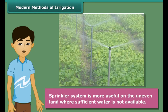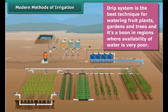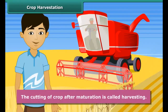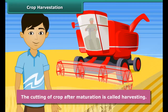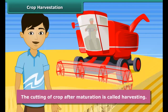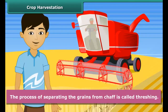Let us now know modern methods of irrigation. A sprinkler system is most useful on uneven land where sufficient water is not available. Perpendicular pipes with rotating nozzles on top are joined to the main pipeline at regular intervals. When water flows through the main pipe under pressure, it escapes from the rotating nozzles and gets sprinkled on the crop as if it is raining. In a drip system, water falls drop by drop just at the position of the root — it is the best technique for fruit plants, gardens, and trees, and is a boon in regions where water availability is very poor.